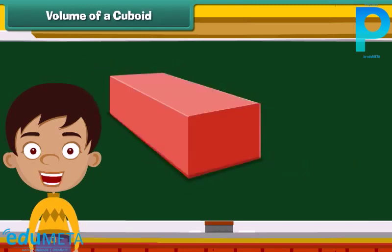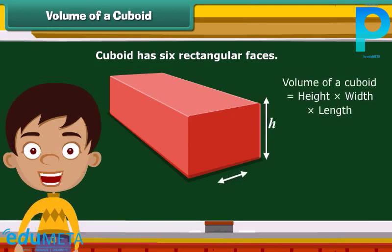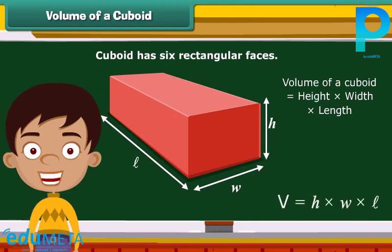Look at this closed box. This is a cuboid which has six rectangular faces. Its volume is calculated as height times width times length. Or simply, volume equals H times W times L.